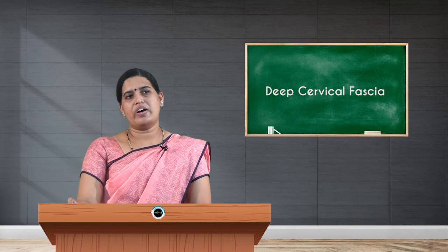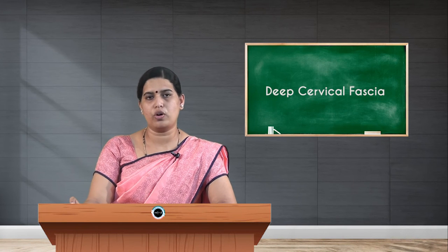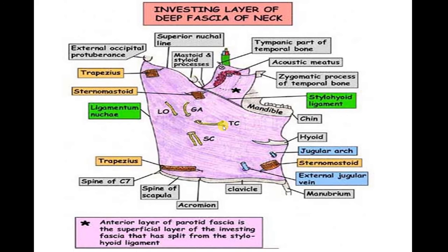For the attachments of the investing layer, starting with the upper extent: it attaches to the external occipital protuberance, the superior nuchal line, the mastoid process, the external acoustic meatus, the zygomatic process of the temporal bone, the lower border of the mandible, and then to the chin.